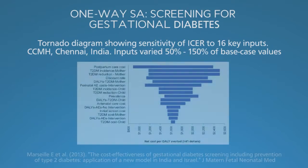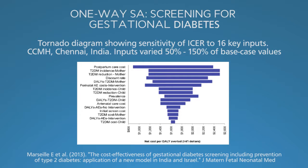Here is an efficient and fun way to summarize one-way sensitivity analysis. It's called a tornado diagram because of the shape. Each horizontal bar indicates the uncertainty in the incremental cost-effectiveness ratio associated with uncertainty in that input — a longer bar means more uncertainty. For this analysis of gestational diabetes screening and treatment, the input that most affects results is the cost of post-partum care at the top, spanning $900 to $2,400 per DALY averted, and the input that least affects results is the cost of type 2 diabetes in the children of women with gestational diabetes at the bottom, spanning $1,600 to $1,680 per DALY averted.